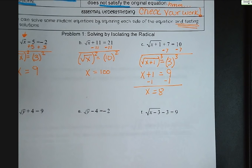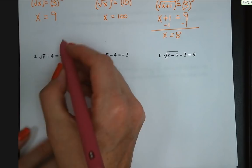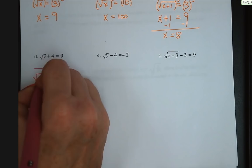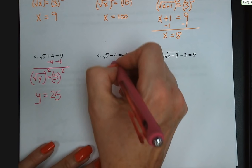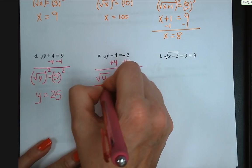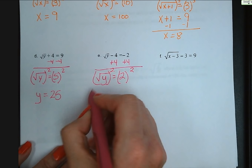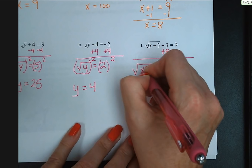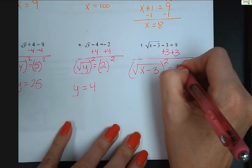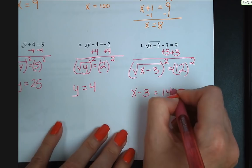For letters d, e, and f: letter d, subtract 4 from both sides — square root of y equals 5, square both sides, y equals 25. Letter e, add 4 to both sides — square root of y equals 2, square both sides, y equals 4. Letter f, add 3 to both sides — square root of x minus 3 equals 12, square both sides, x minus 3 equals 144, add 3 to both sides, x equals 147.